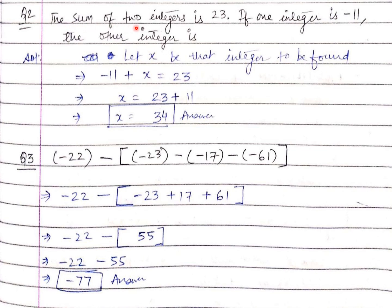Question number 2: the sum of two integers is 23. If one integer is minus 11, find the other integer. First, try to write the problem statement in the form of an equation. Assume the missing number as x. The question says there is an integer adding into minus 11. So we have minus 11 plus x equals 23. To find the value of this variable, isolate it — keep it on the left hand side and take all other things to the right side. This minus 11 goes to that side and becomes plus 11. So these two will be added and the answer is x equal to 34.